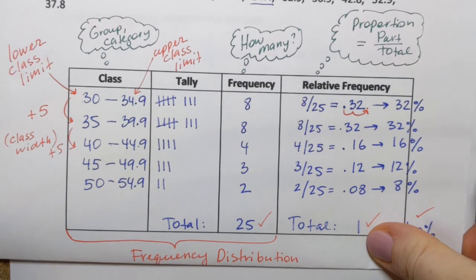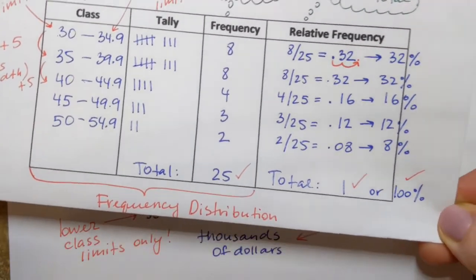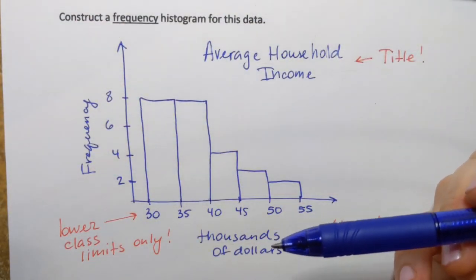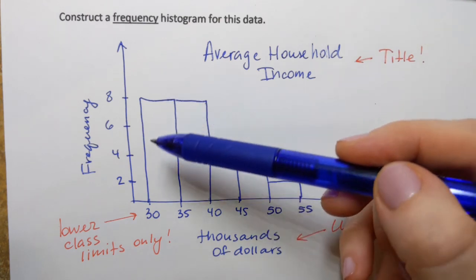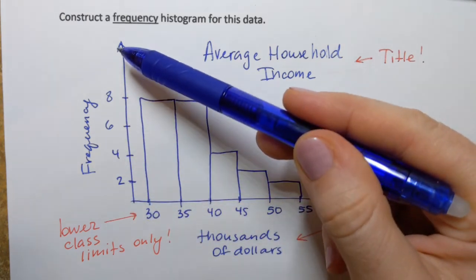Well, guess what? That histogram would not look much different. In fact, from far away, it will look exactly the same. And as you look closer, the only difference you're going to notice is that the vertical axis is not labeled as frequency, but relative frequency.